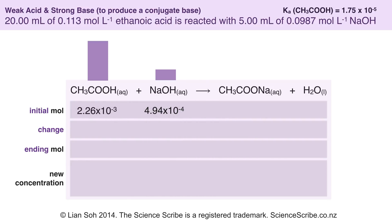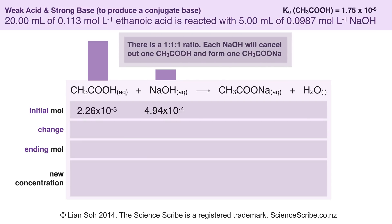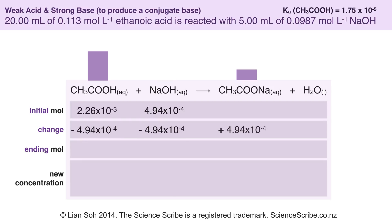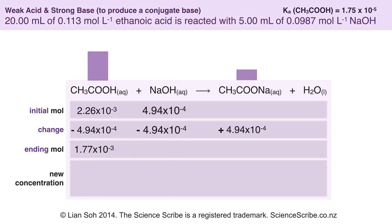This tells me I have more ethanoic acid present than sodium hydroxide. There is a 1:1:1 ratio, so each sodium hydroxide cancels out one ethanoic acid molecule, and in the process produces one ethanoate ion in the form of sodium ethanoate. To work out my final moles I subtract them, and for sodium ethanoate I'm forming 4.94 × 10⁻⁴ moles.